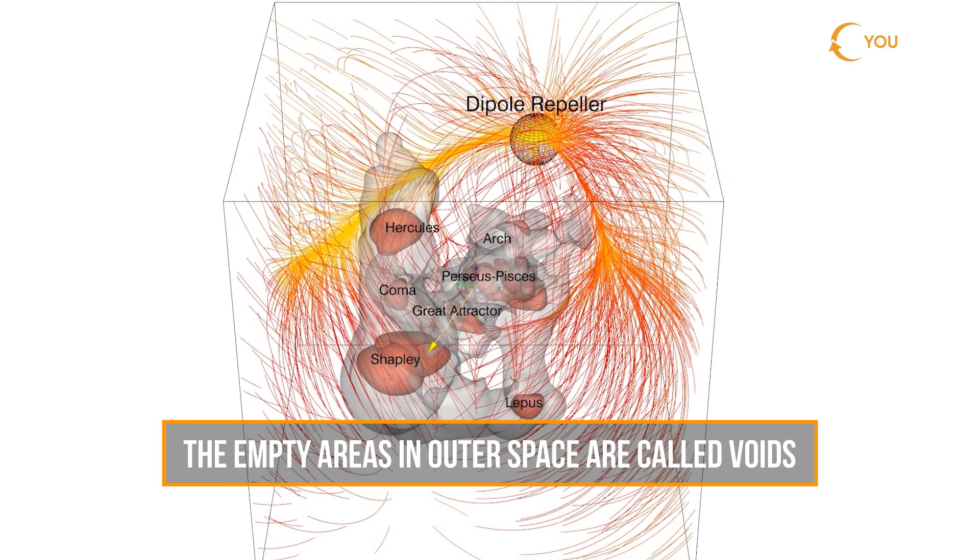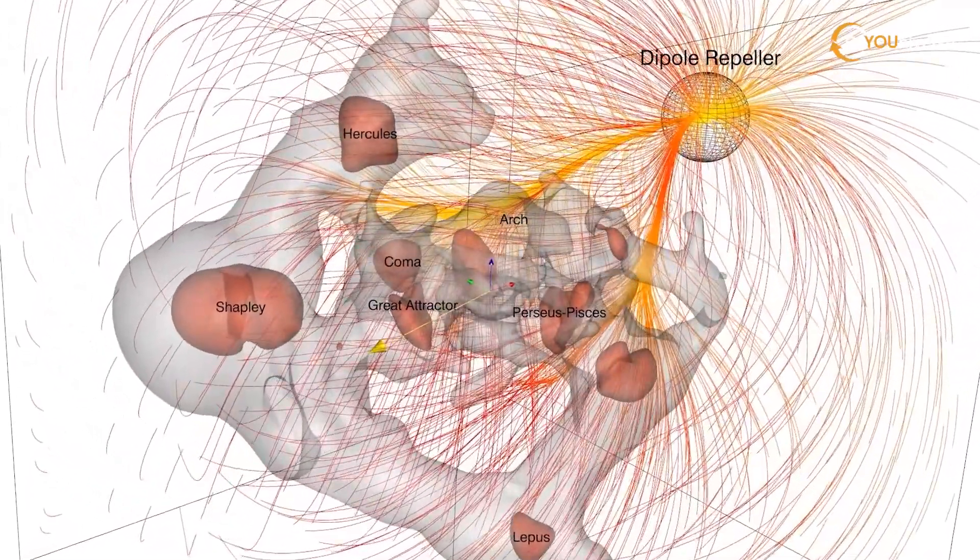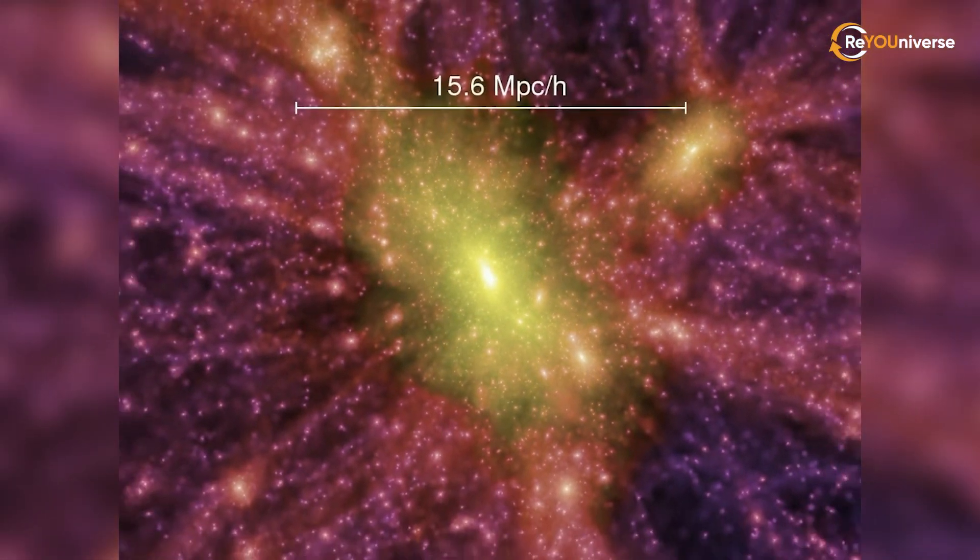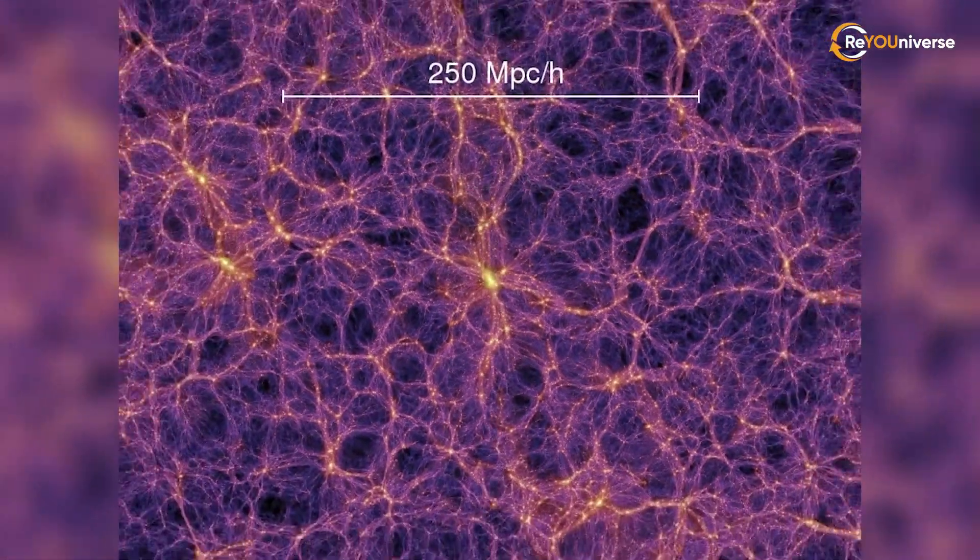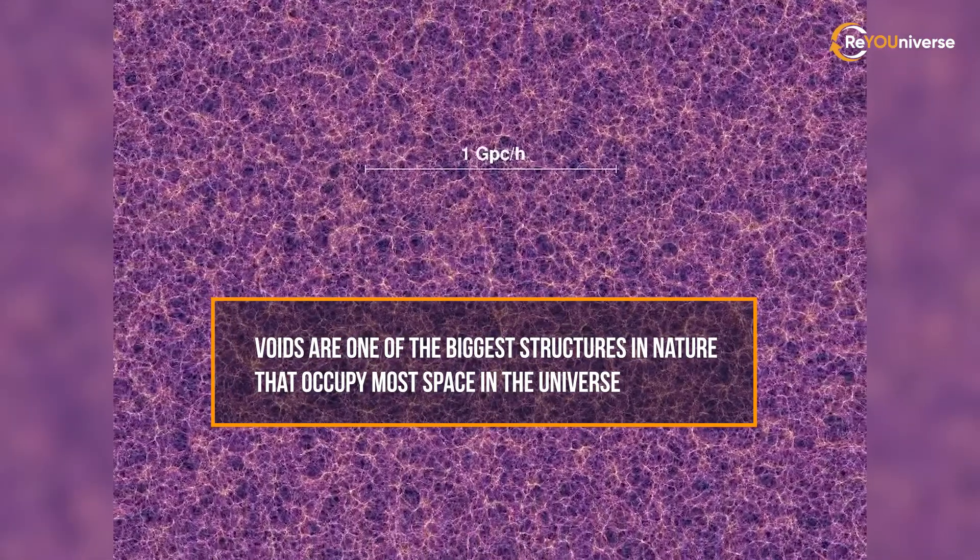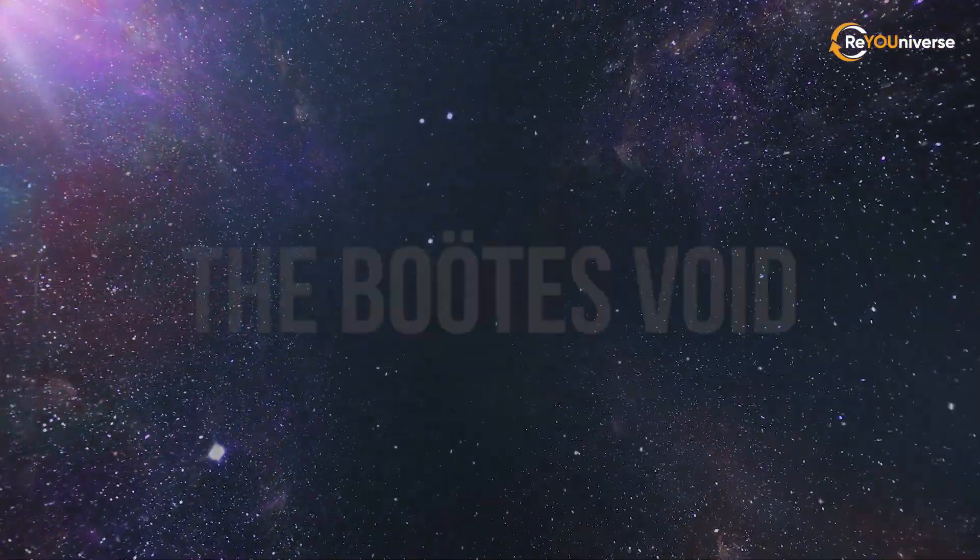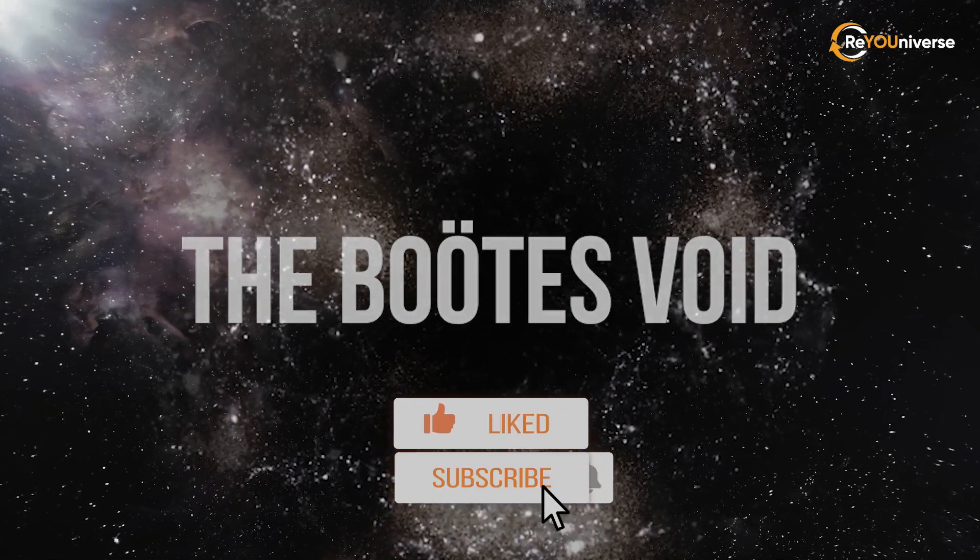Such empty areas in outer space are called voids. And if you look at the universe from the outside, it would seem like an infinite network of galactic threads divided by empty spaces called voids. This is what our world looks like if you could capture it in one picture. Ten billion light-years connected with galactic threads. Voids are one of the biggest structures in nature that occupy most space in the universe. Today, we will focus on one of these voids. This is the Boötes Void. Please subscribe to our channel and like this video.